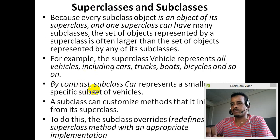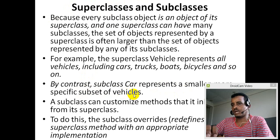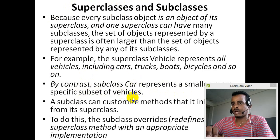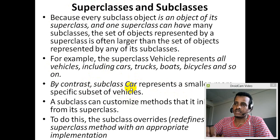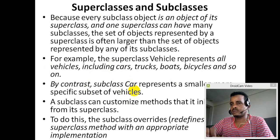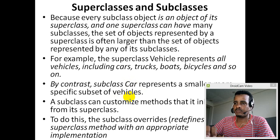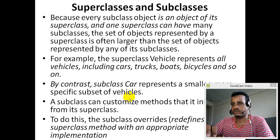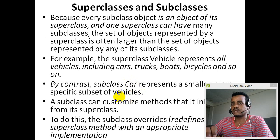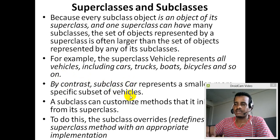The superclass represents a larger set. By contrast, subclass car represents a smaller, more specific subset of vehicles. Car is an example of automobile. The automobile can be a car or a truck. Brands like Toyota, Renault, Mitsubishi, and Nissan are examples of cars, which are subclasses of the automobile superclass.